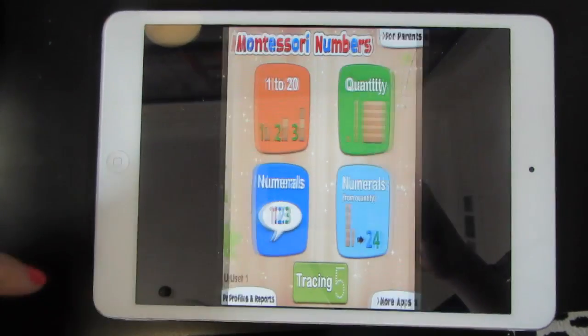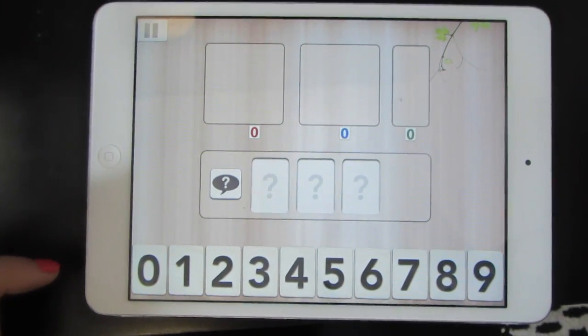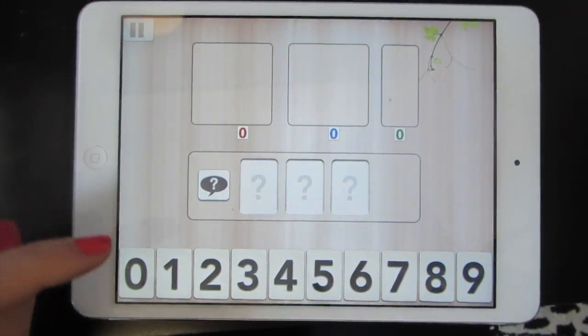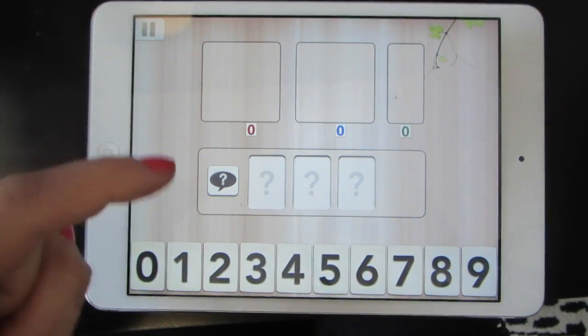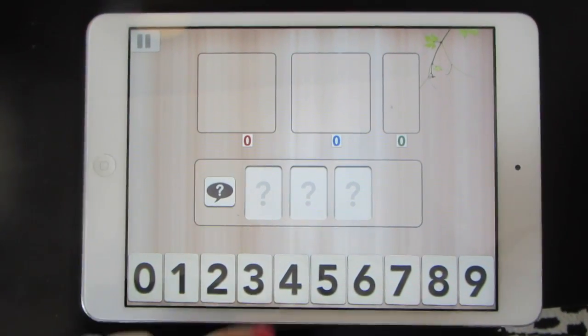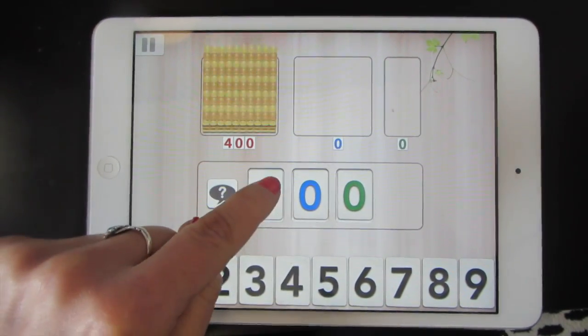Again, tap 100 to 999. Make sure you have the sound on so you can hear what number they pronounce. Then you'll drag the cards to create the number.